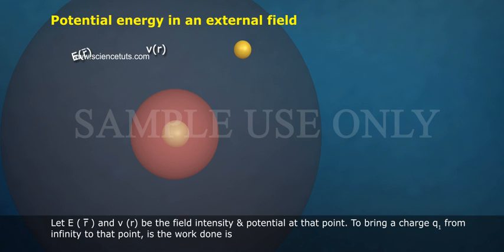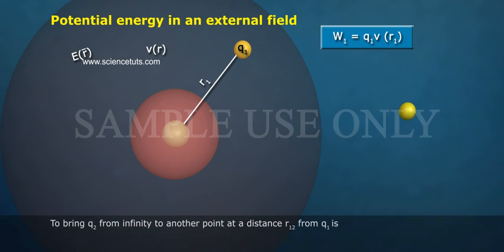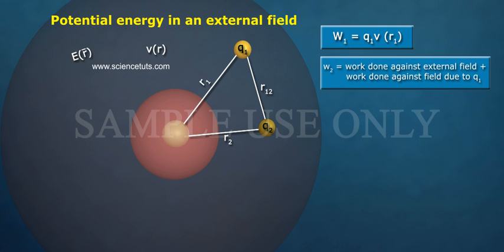To bring a charge Q1 from infinity to that point, the work done is W1 equals Q1 dot V R1. To bring Q2 from infinity to another point at a distance R2 from Q1, W2 is equal to work done against external field plus work done against field due to Q1.